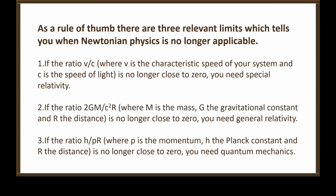Rumpus was absolutely correct. As a rule of thumb, there are three relevant limits that tell you when Newtonian physics is no longer applicable. Number one: if the ratio of V to C — where V is the characteristic speed of your system and C is the speed of light — is no longer close to zero, you need special relativity. Number two: if the ratio of the gravitational constant times mass divided by the speed of light squared times the distance involved is no longer close to zero, you need general relativity. Finally, if the ratio of the Planck constant to the product of momentum and the distance involved is no longer close to zero, you need quantum mechanics. Under any other circumstances, with very few exceptions, no one would ever use Einstein's field equations to analyze something like Cavendish.